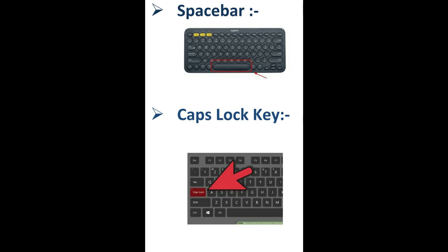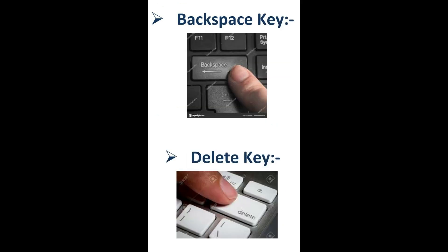The third one is backspace key. Backspace key is just like an eraser — it is used to erase a letter to the left of the cursor position. The next one is delete key. This key also erases a letter, but the difference is that it erases towards the right side of the cursor position.